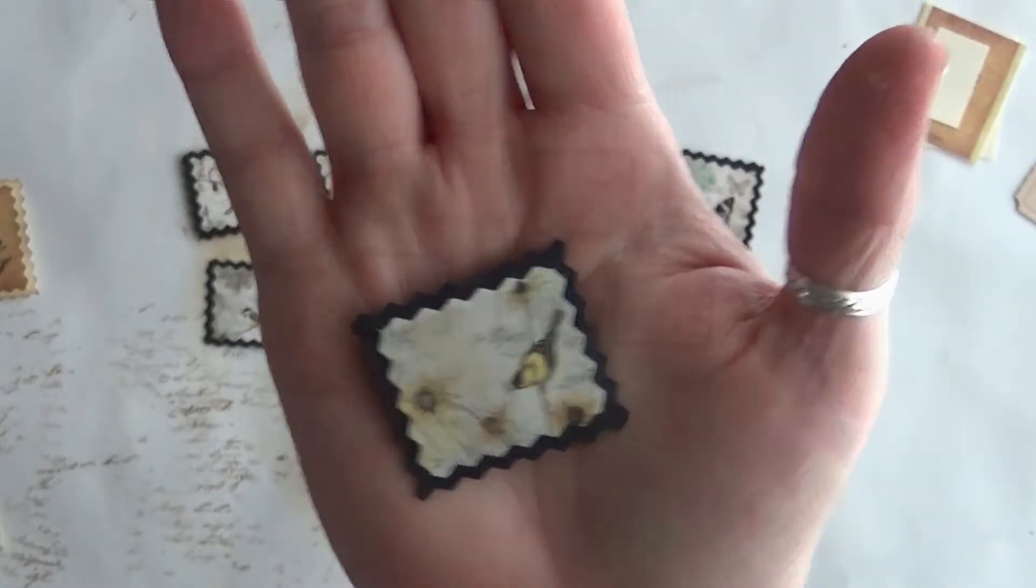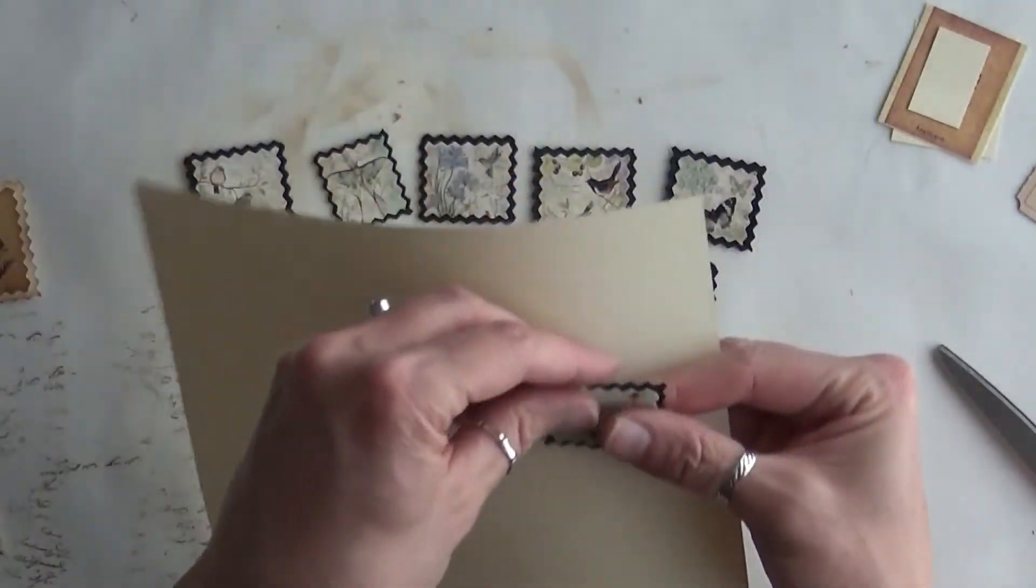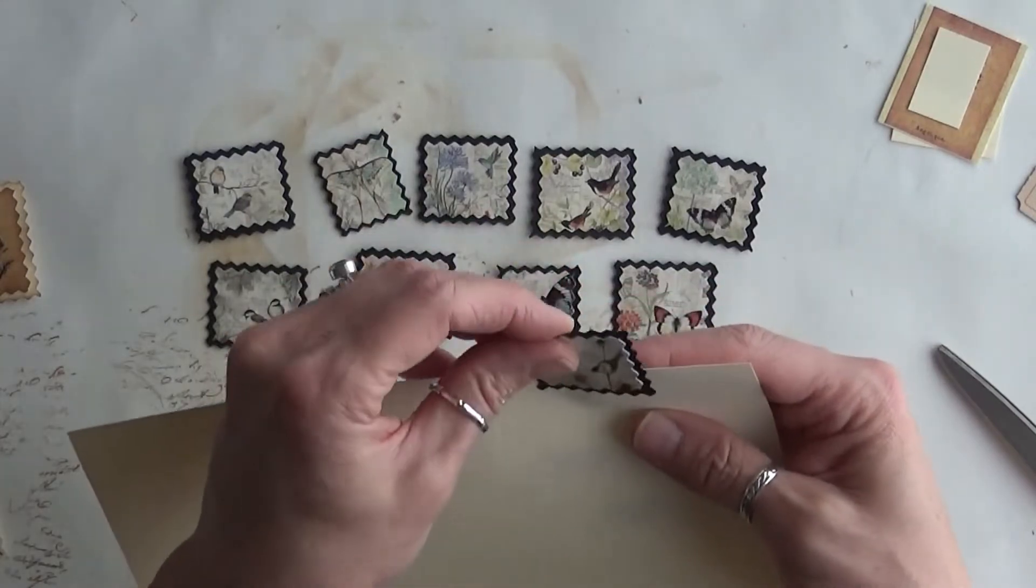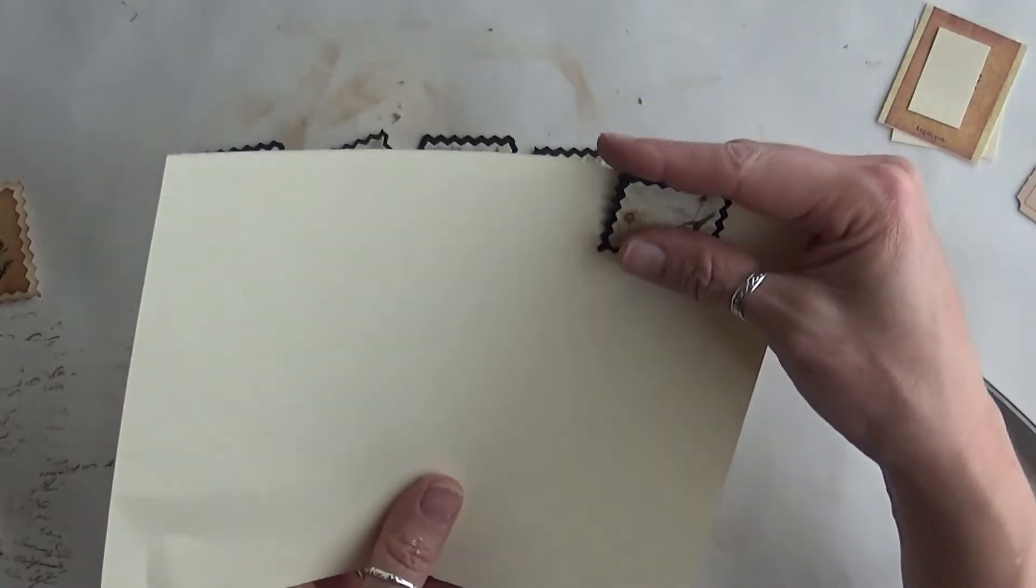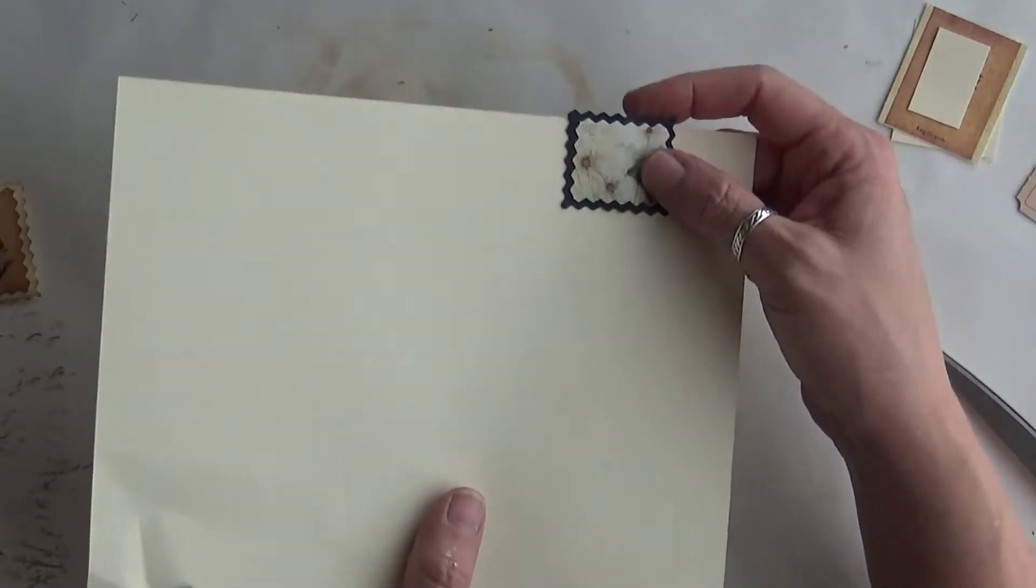They're super easy and really cute. Let's say this is a junk journal page - you can just clip it right to the page just like that, and then you can tuck stuff under it, whatever you want to do with these.